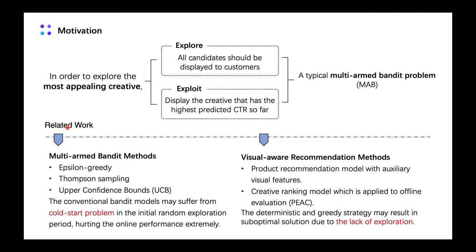There are two typical related works. One is the multi-armed bandit methods, like epsilon-greedy, Thompson Sampling, and UCB. These approaches are widely used strategies to deal with the bandit problem. However, creatives change more frequently than products, and most of them cannot have sufficient impression opportunities to get a reliable CTR. So this conventional bandit model may suffer from the cold-start problem.